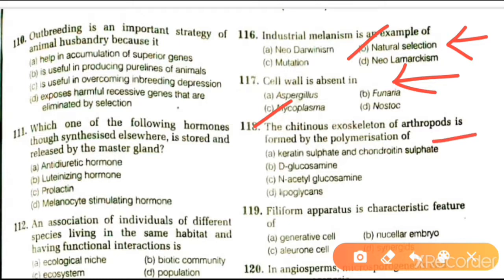Next question: the chitinous exoskeleton of arthropods is formed by the polymerization of keratin sulfate and chondroitin sulfate; D-glucosamine and acetyl-glucosamine; or lipoglycans. The correct option is C.